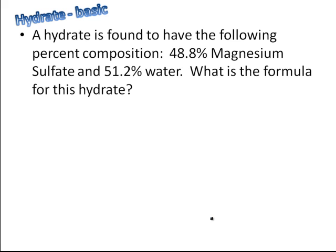Alright, hydrate problems. We've got two hydrate problems and then we're all done here. So we've got a hydrate that's got 48.8% magnesium sulfate and then 51.2% water. So it's a little bit more than half water. And then it says, what's the formula? So you do this the exact same way. Figure out what your moles are. First thing you do is drop percent and change it to grams. We're going to assume our sample size is 100 grams.